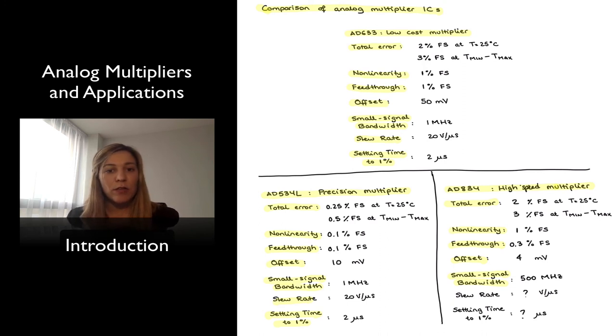Obviously, the difference between a better multiplier or an average multiplier like the 633 is going to be mostly in the cost. You can see that both the 534 and 834 multipliers are going to be much more expensive than the 633. And any multiplier is going to be an order of magnitude at least more expensive than a standard op-amp.